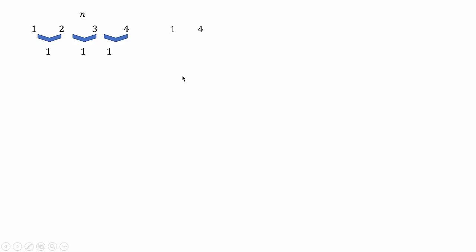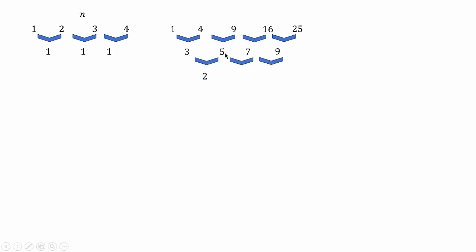Let's look at another sequence and find the differences of consecutive terms. We didn't find a common difference, so we proceed again to find the common differences. It took us two steps to find the common difference, so the general term must be represented by a polynomial in degree 2. As we already know, the general term for this sequence is n squared.